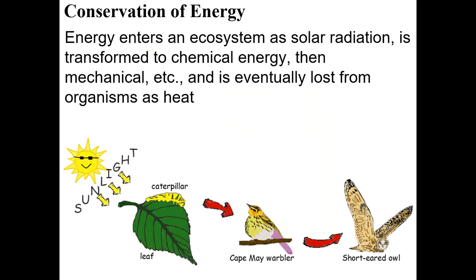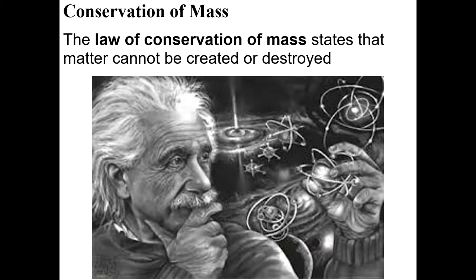Conservation of energy: energy enters an ecosystem as solar radiation, is transformed, but eventually lost as heat. You're converting it into something not super useful. Be careful — producers do not create energy, they only convert it. The Law of Conservation of Mass states that matter cannot be created or destroyed. While technically E=mc² allows conversion between mass and energy, for biology purposes matter is conserved.